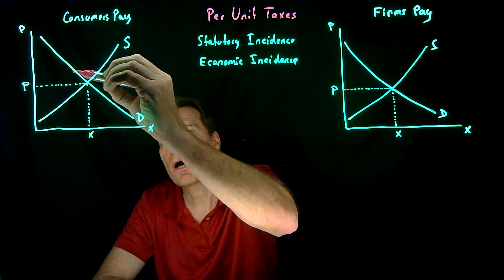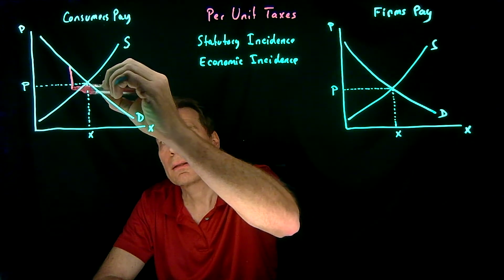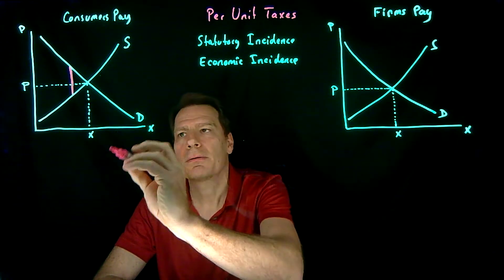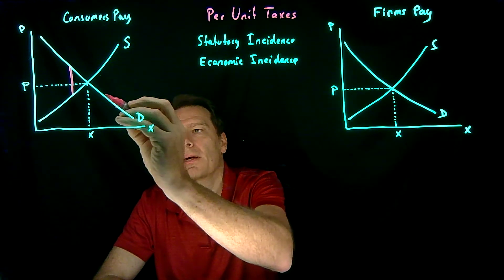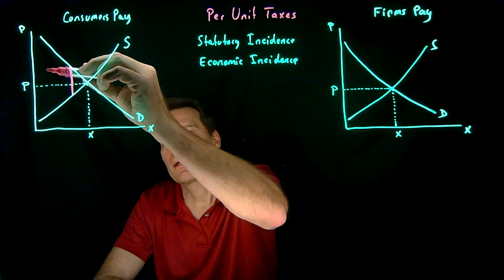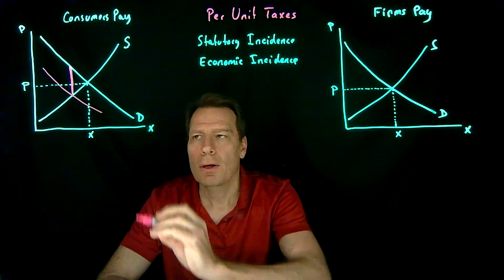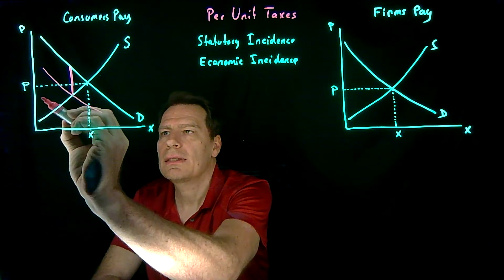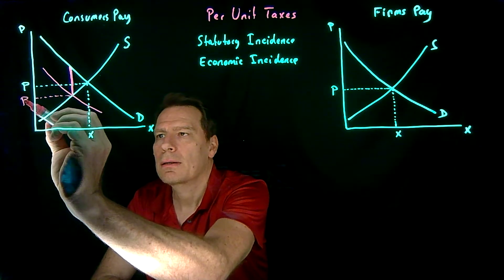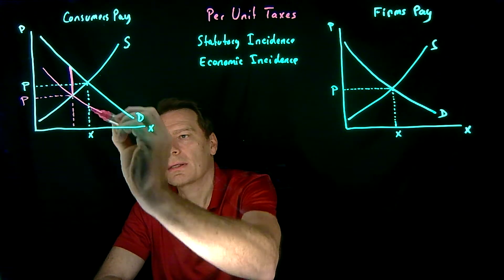We'll see a downward shift in the demand curve by the per-unit tax, so that when the demand curve shifts, it's going to cross at a new equilibrium. We'll see a decrease in the price and a decrease in the quantity.